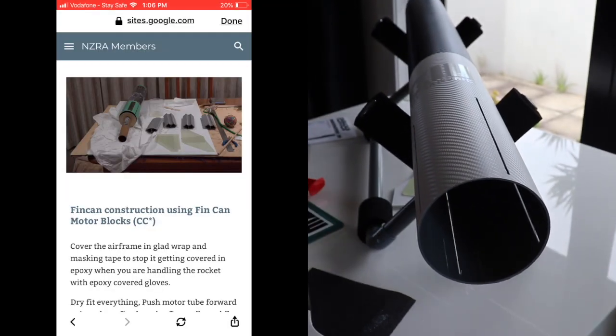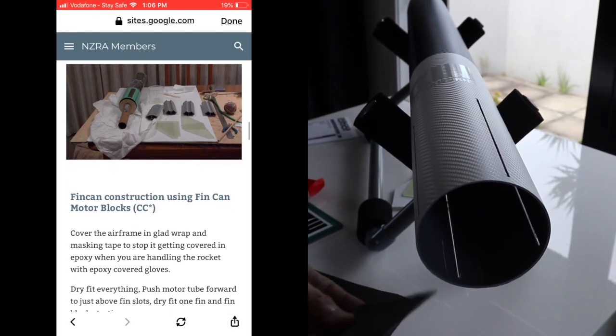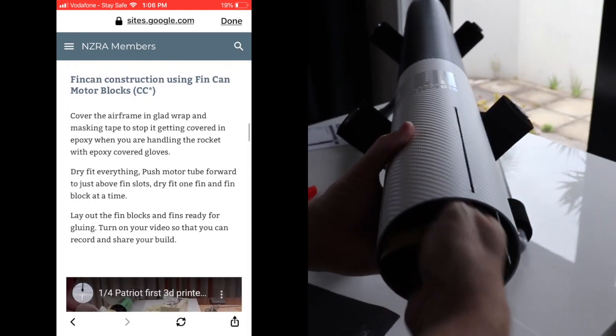Take some 80 grit sandpaper and set about the inside of the fuselage where the fin can is going to be assembled. That will help all of the parts to grip when we start using epoxy.